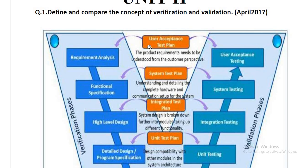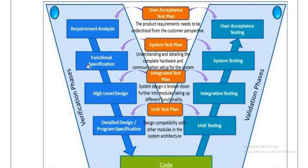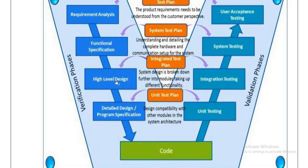The second comparison point is about functional specifications. Understanding and detailing the complete hardware and communication setup for the system — how that software is going to function, what hardware they are going to use, and what kind of system the client has. The functional requirements define what functions the software will have, and the system should also be compatible with those functions. So if the hardware and system setup is proper, then system testing will pass.